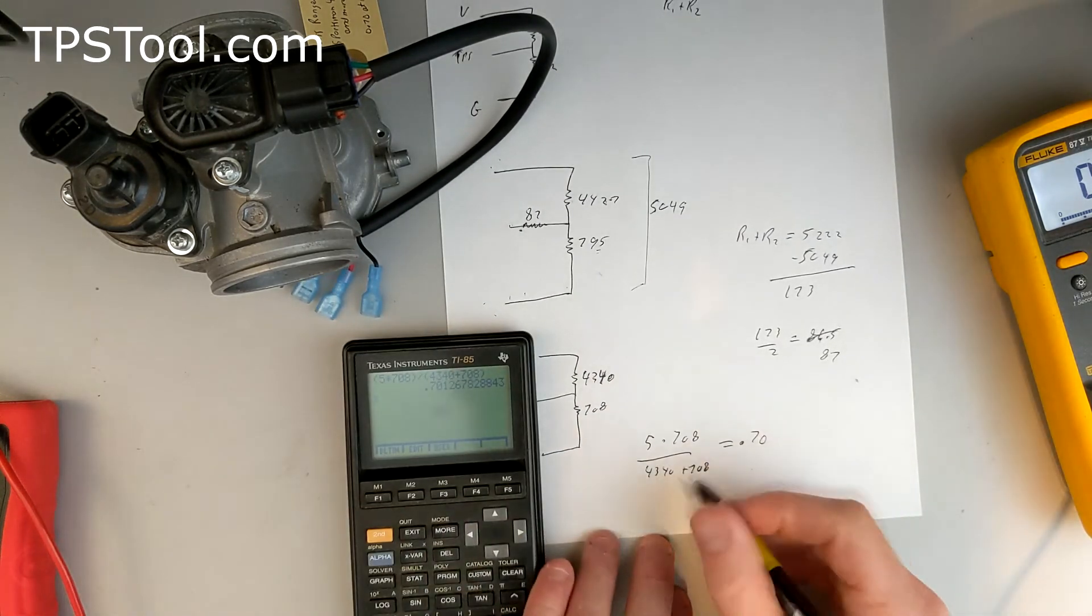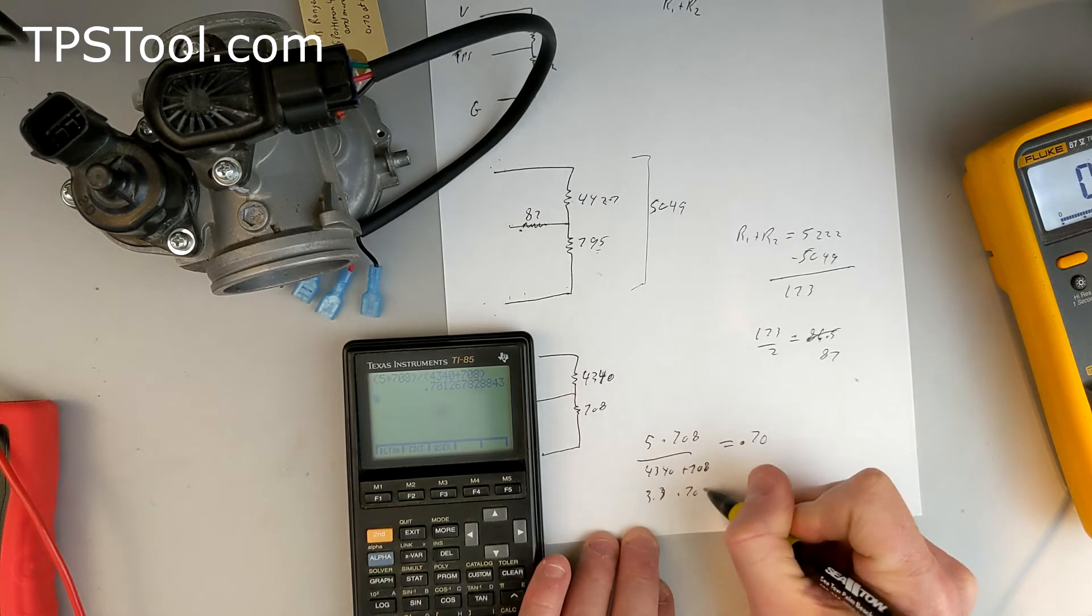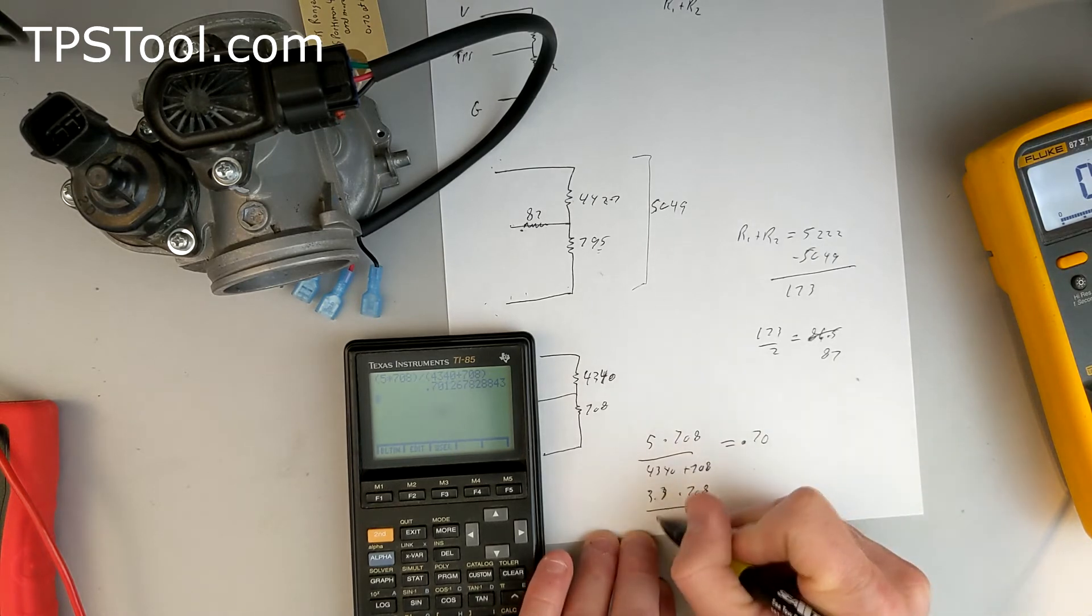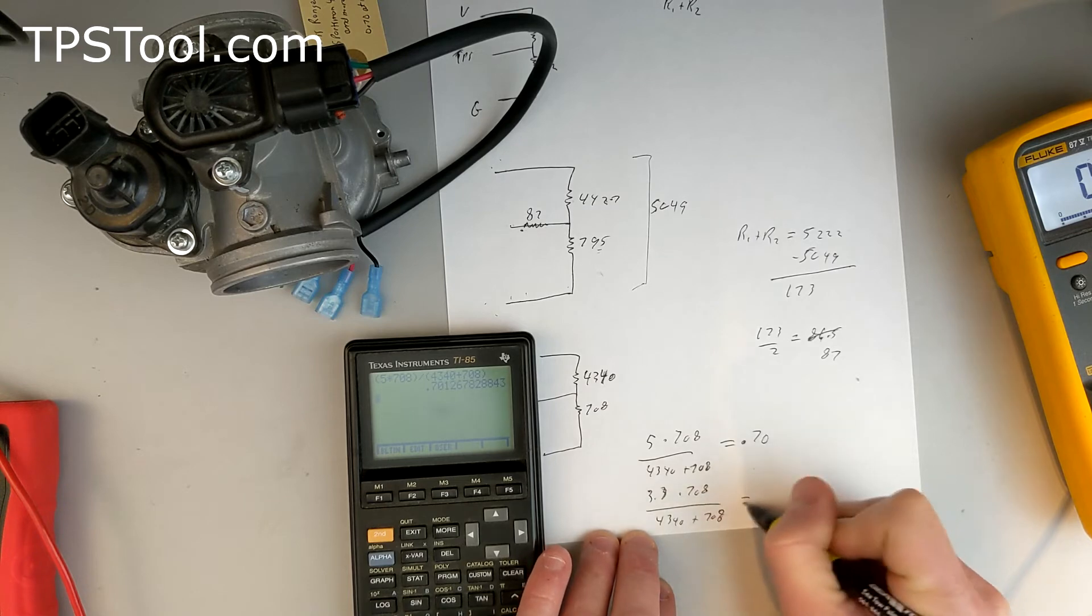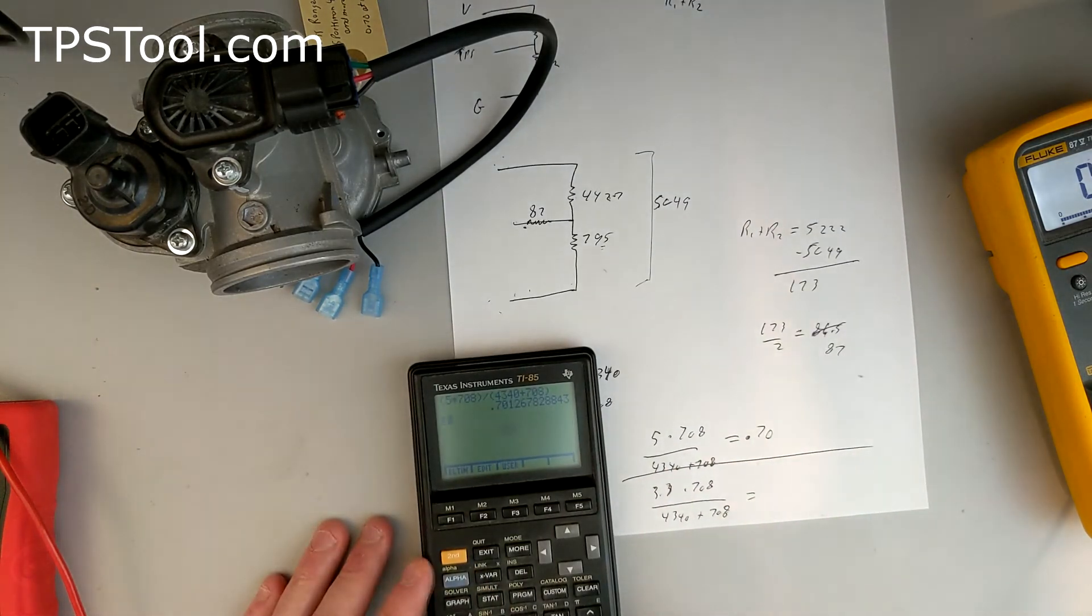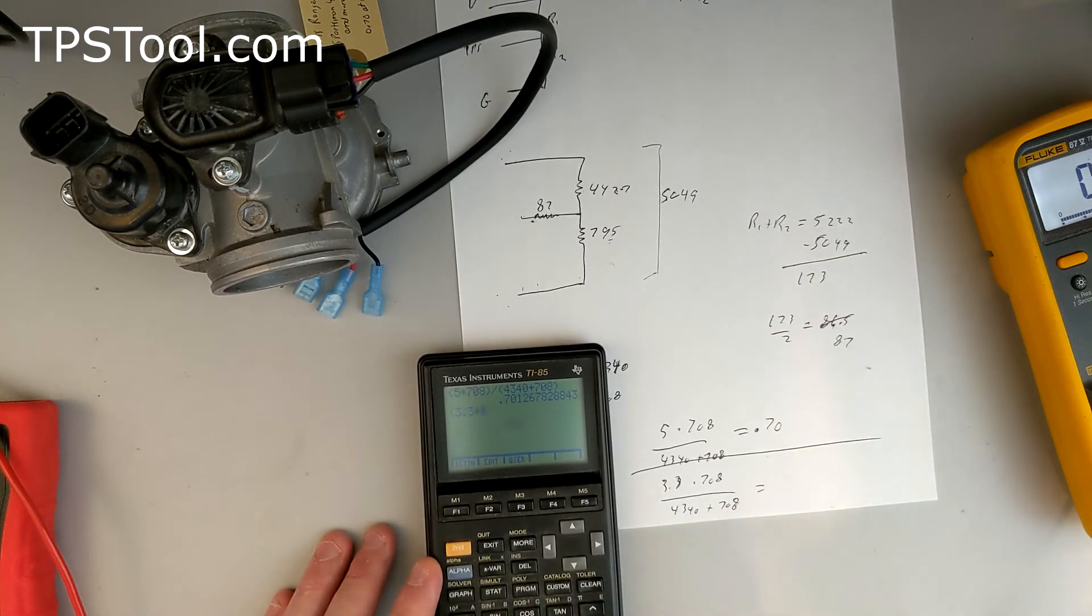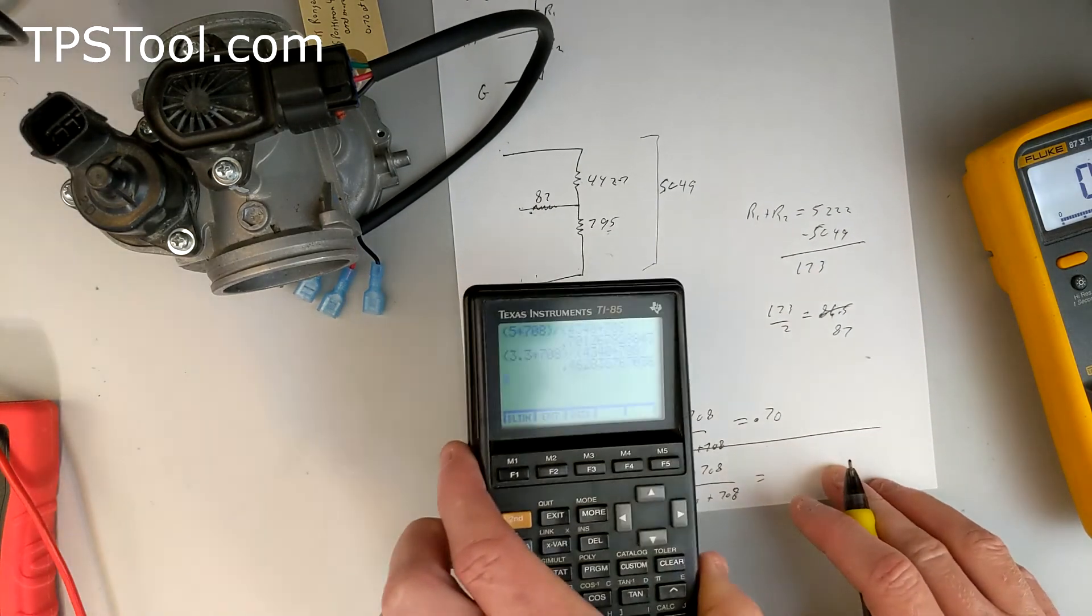And now, let's change that for 3.3. So, 3.3 times 708 over 4340 plus 708 is, let's do our math, 3.3 times 708 divided by 4340 plus 708. There you go. 0.46.